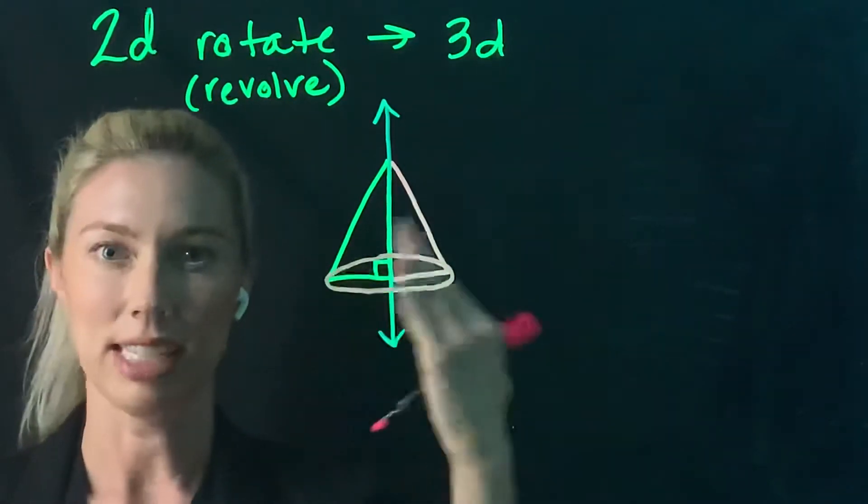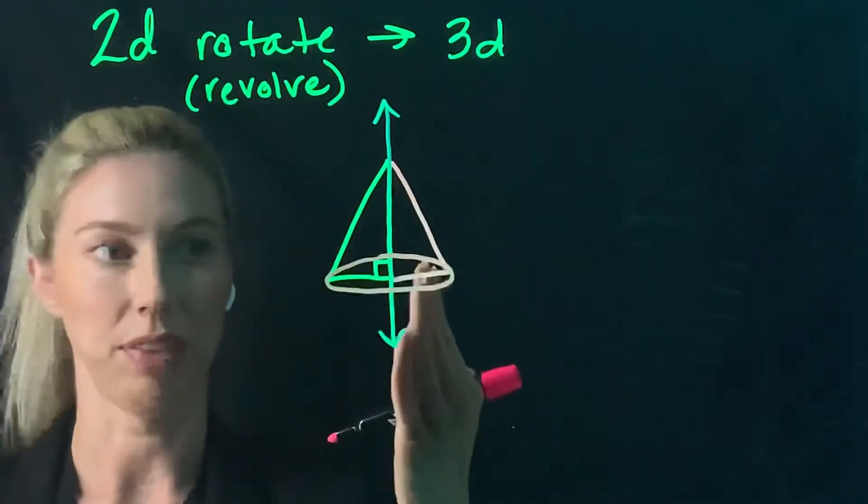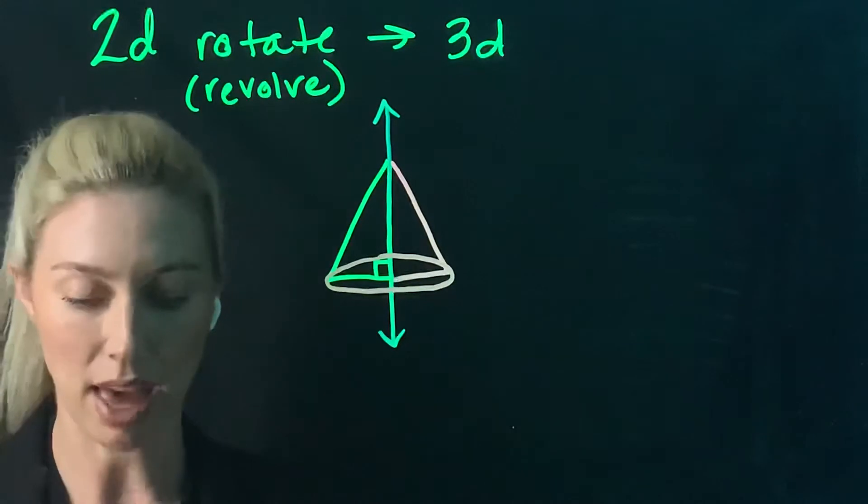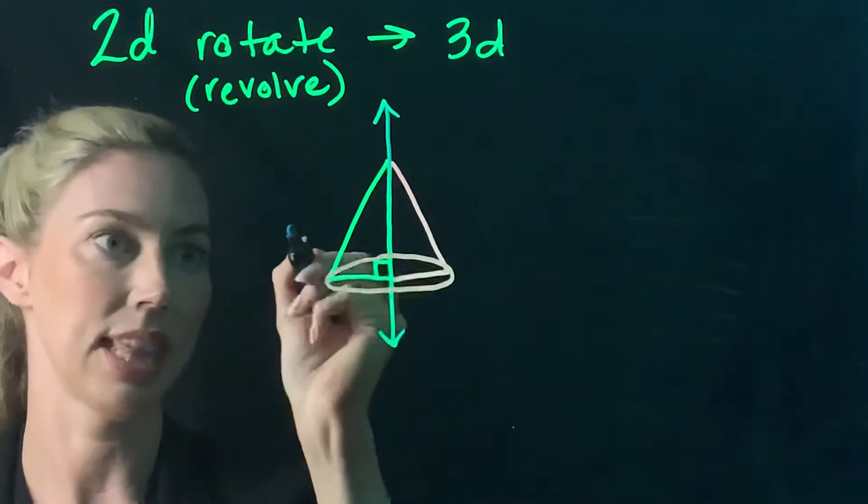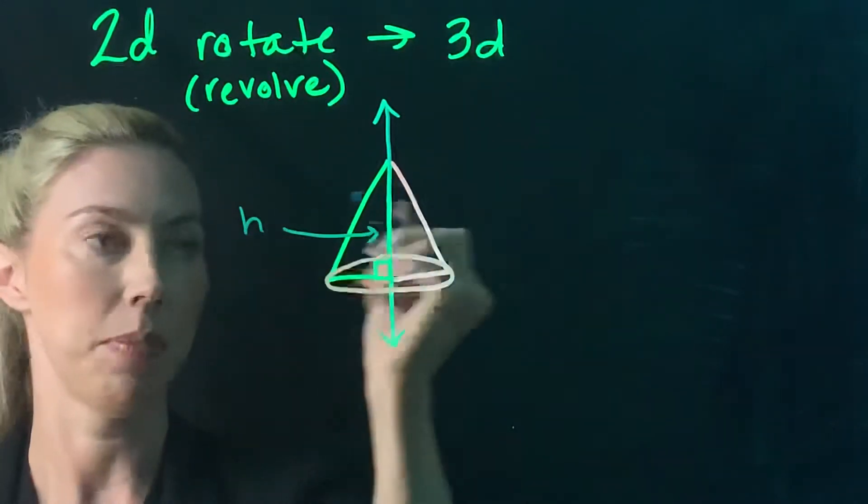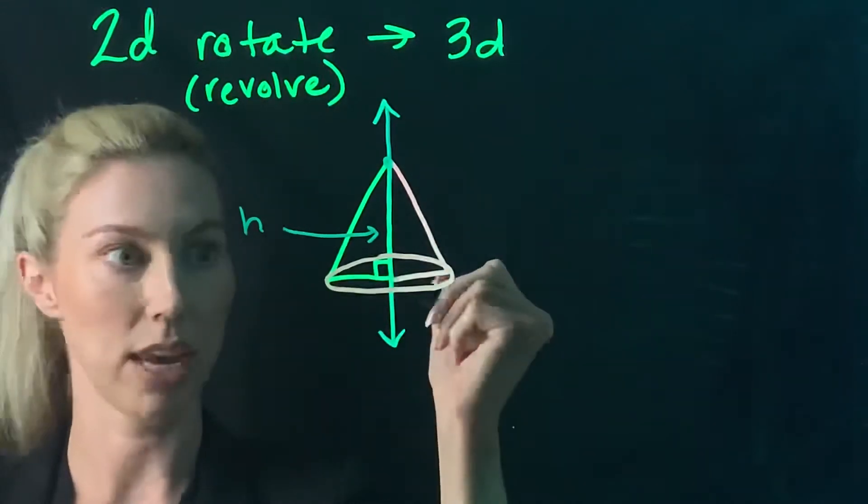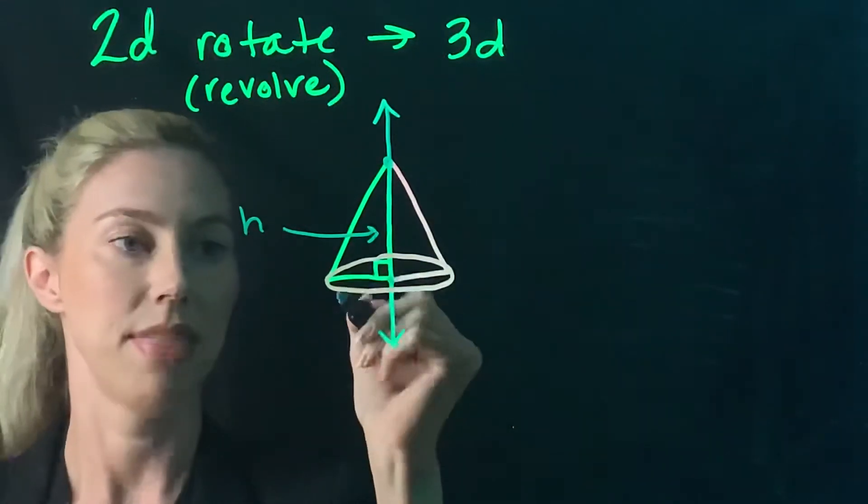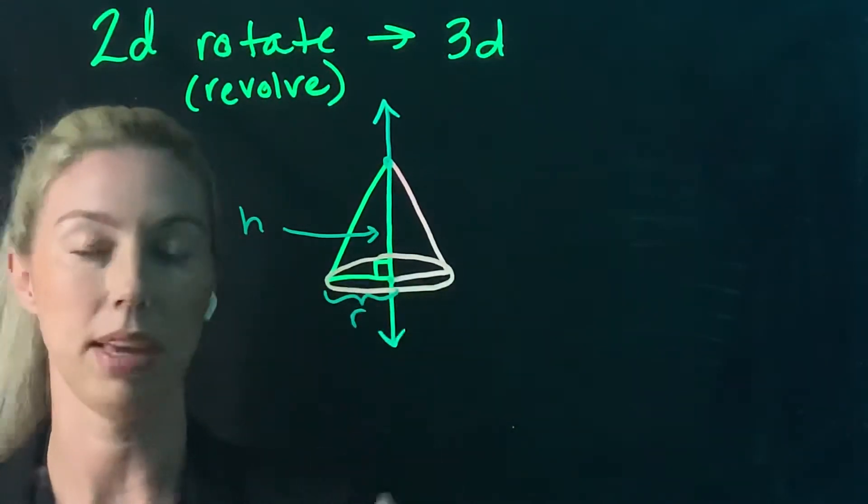That gives you the idea of it revolving around the axis. If I do that, you'll be able to see that the height is from the vertex of the shape to the base, and the radius is that part.